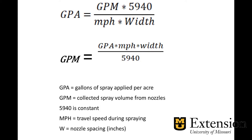To determine gallons per acre, or GPA, we use the top equation, which is gallons per minute times 5940 — which is our constant — divided by our speed in miles per hour times our width in inches between our nozzles.